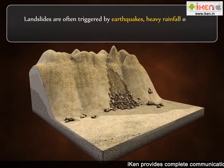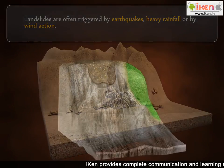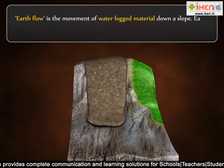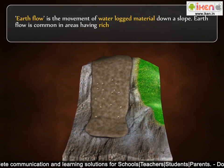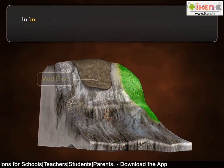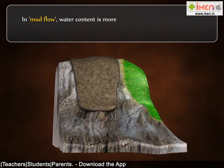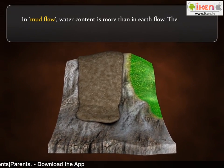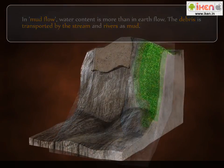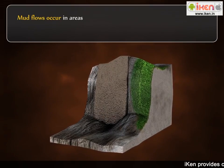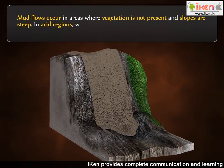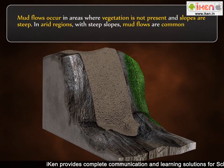Earth flow is the movement of waterlogged material down a slope. It is common in areas having rich alluvium soils and on hillsides. In mud flow, water content is more than in earth flow. The debris is transported by streams and rivers as mud. Mud flows occur in areas where vegetation is not present and slopes are steep. In arid regions with steep slopes, mud flows are common during rainfall.